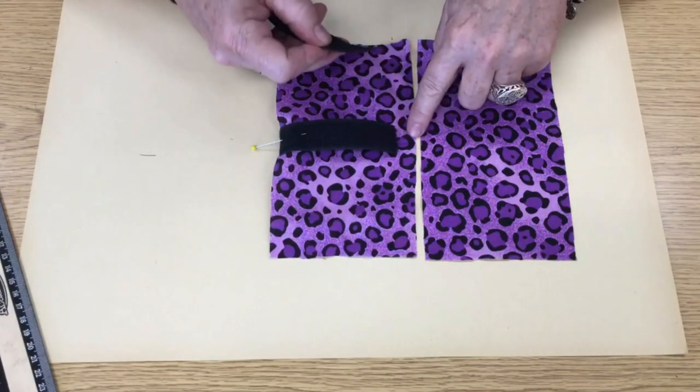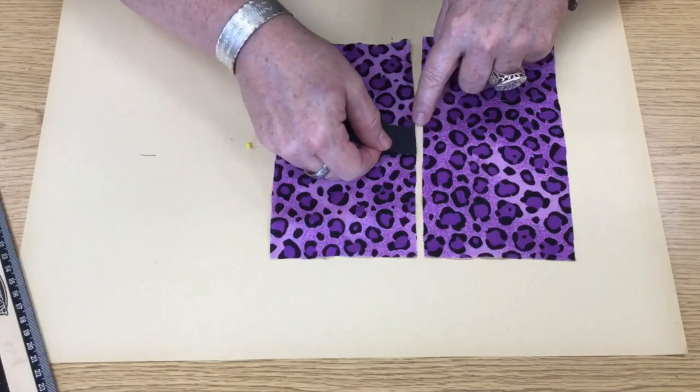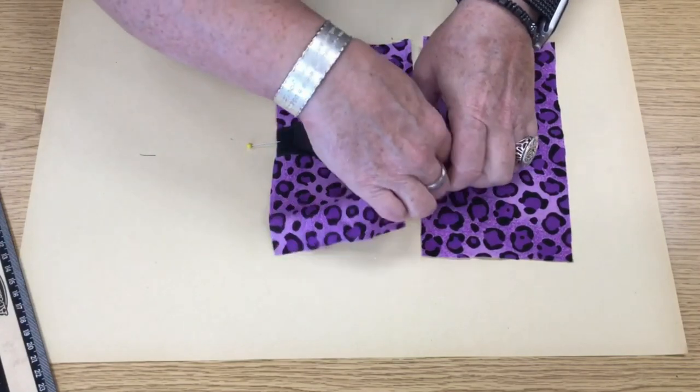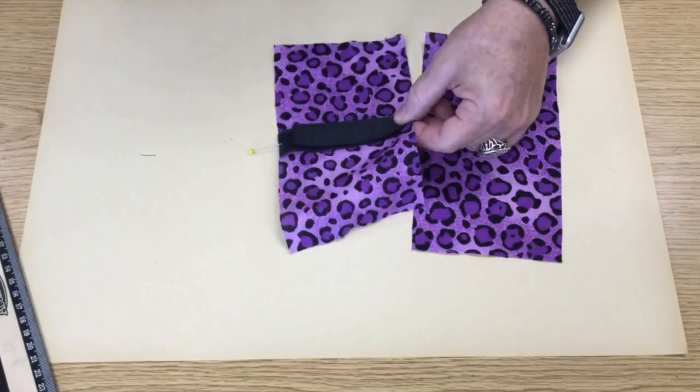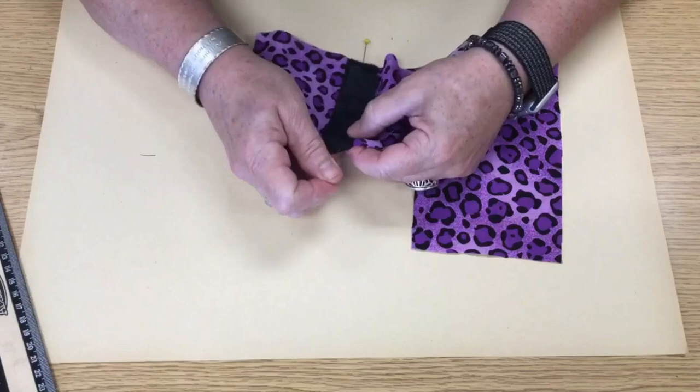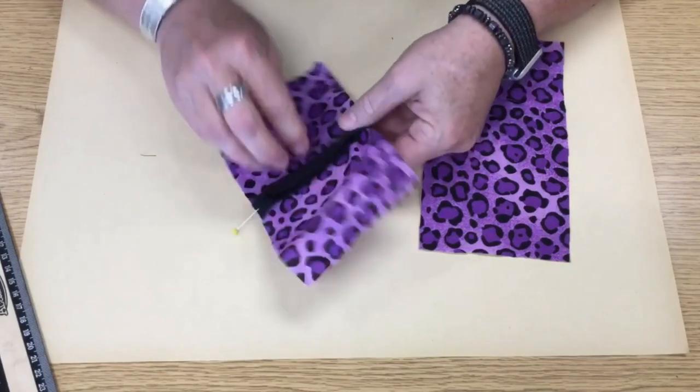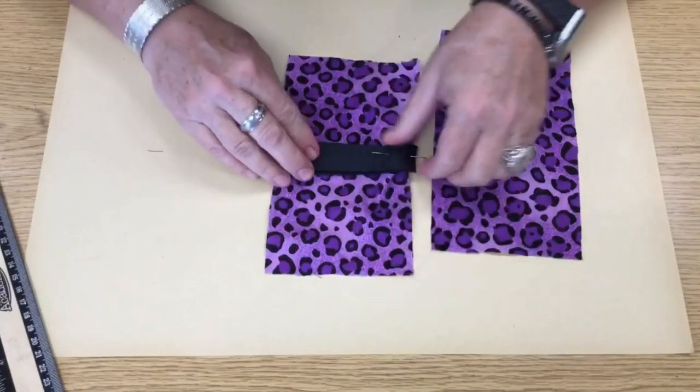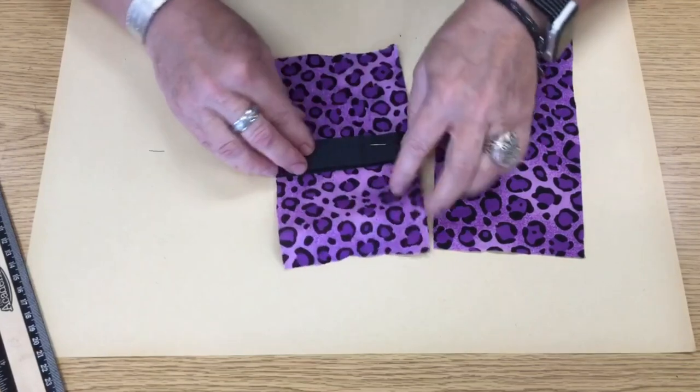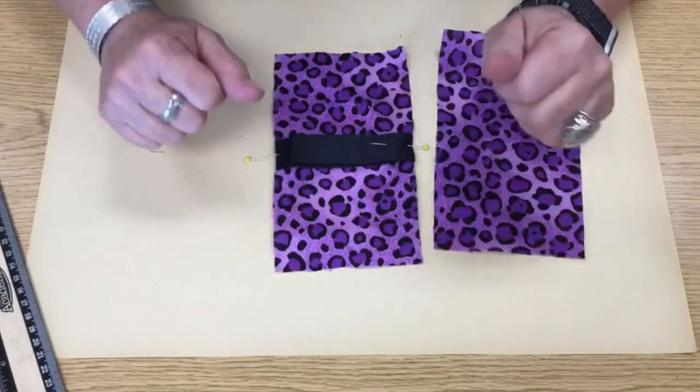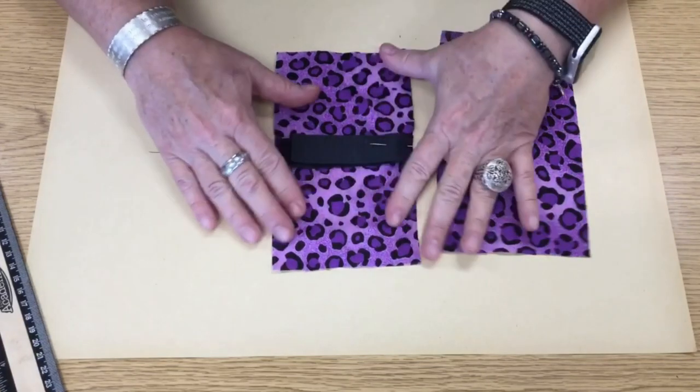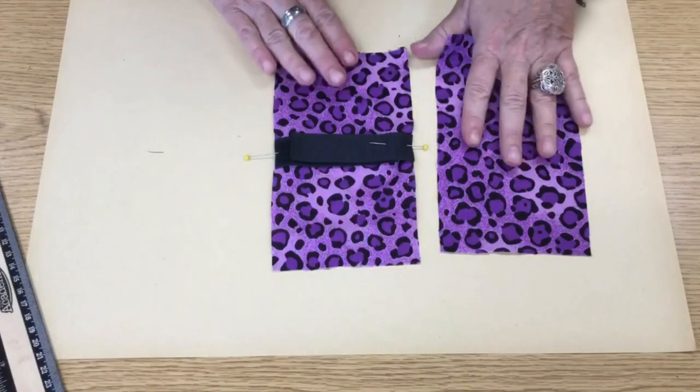Then you're going to go to the other side where your crease is and you're going to match it up. And at this point, you can put your velcro together so it's out of your way. And you're going to pin it down. I like to pin to the outside where the pinheads are on the outside of your fabric because it is easier to remove whenever you're sewing. And you want to be sure and remember not to sew over pins because it could break a pin or break the needle on the sewing machine and it could flip up and hit you in the face.